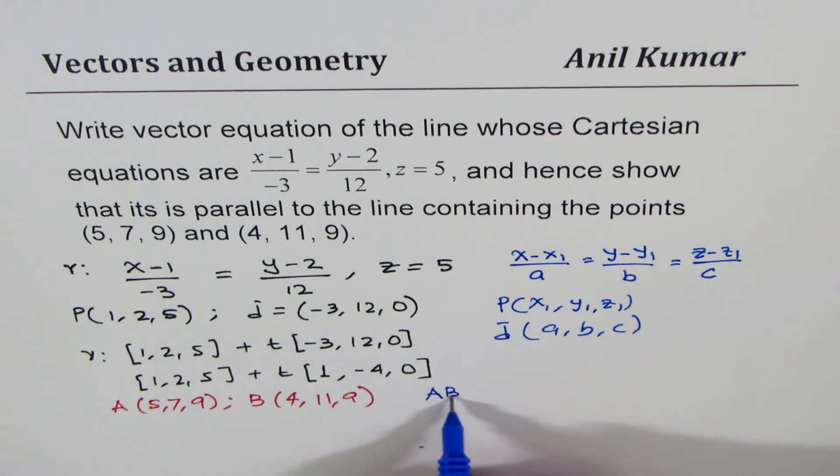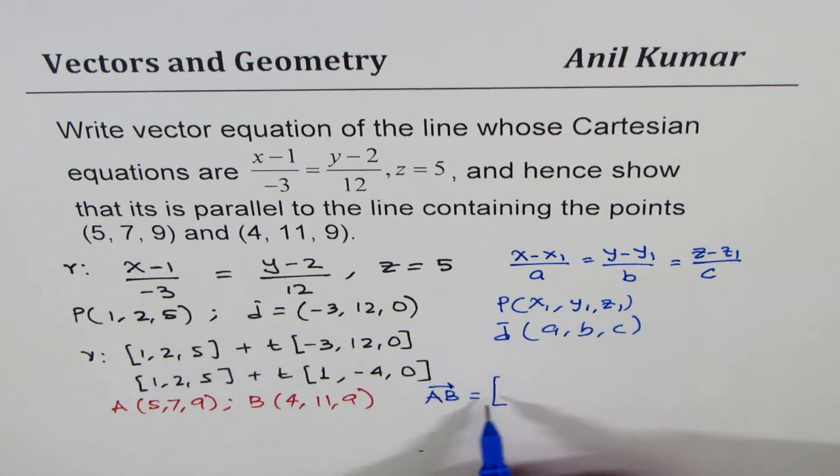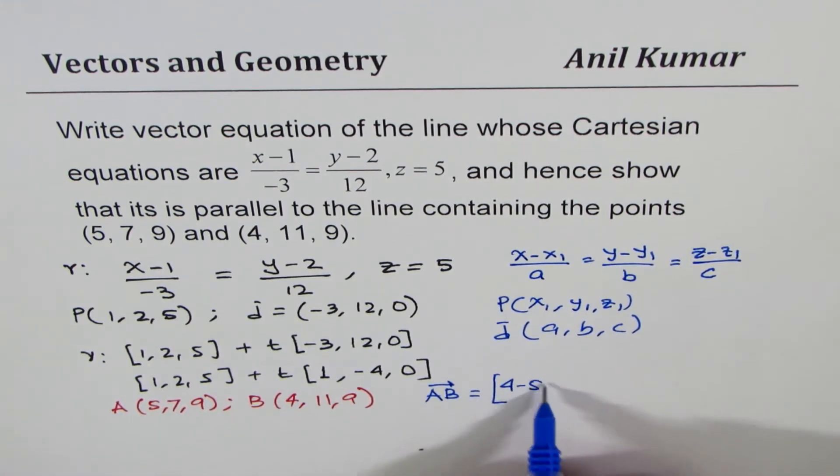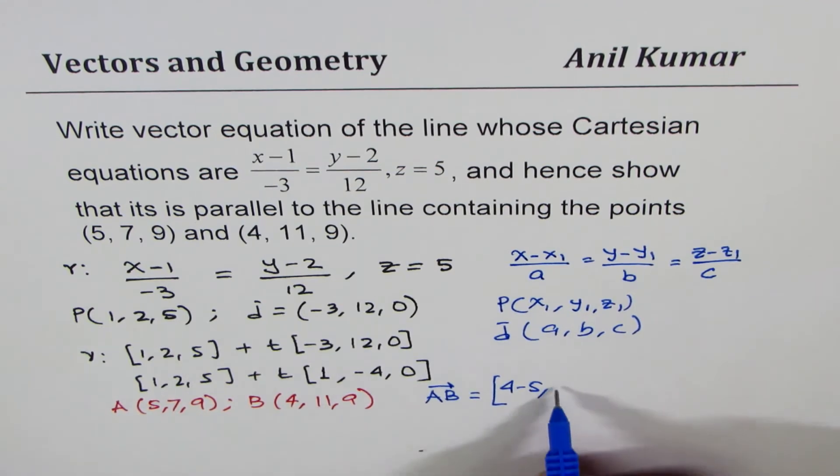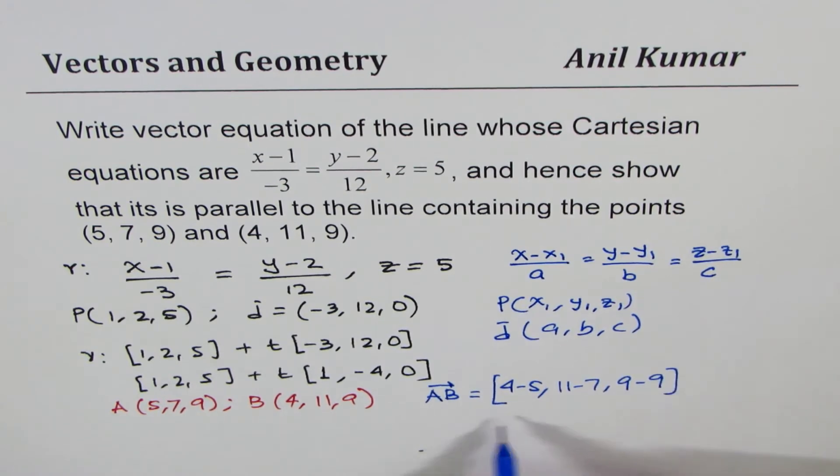So let's find the direction A to B. So that will be 4 minus 5, we'll do 4 minus 5, 11 minus 7, and 9 minus 9. So that gives you equal to minus 1, 11 minus 7 is 4, and that gives you 0.